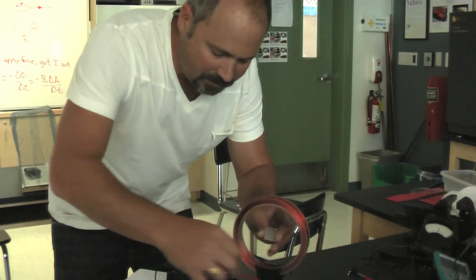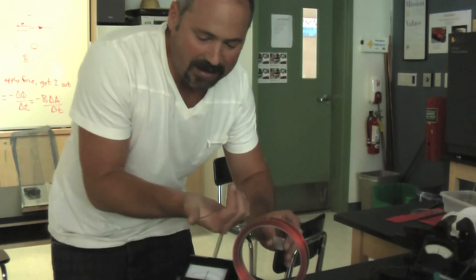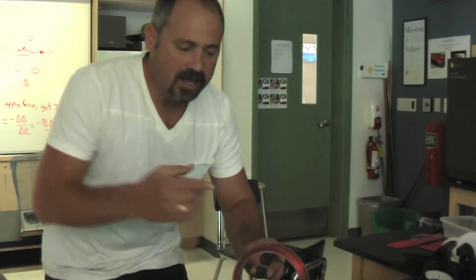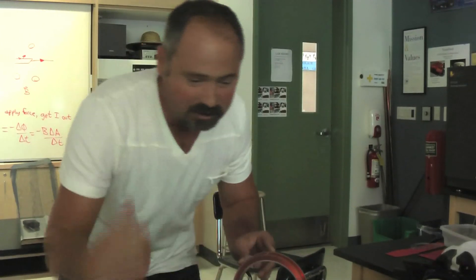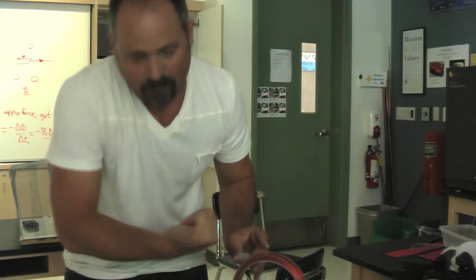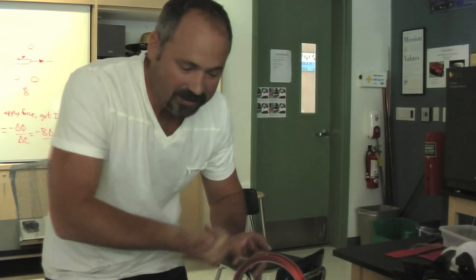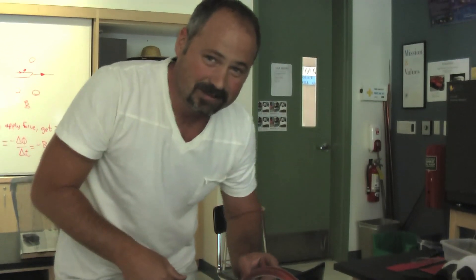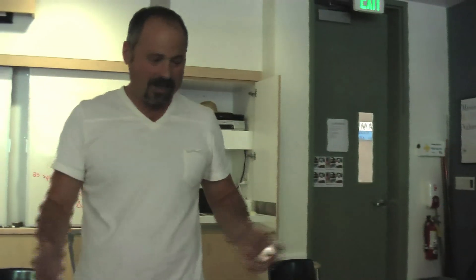Now as I back the magnet out, then this magnetic field is getting smaller, smaller, electricity is generated in this direction, which creates a magnetic field like this, to try to keep it strong in that direction. It's Lenz's Law.